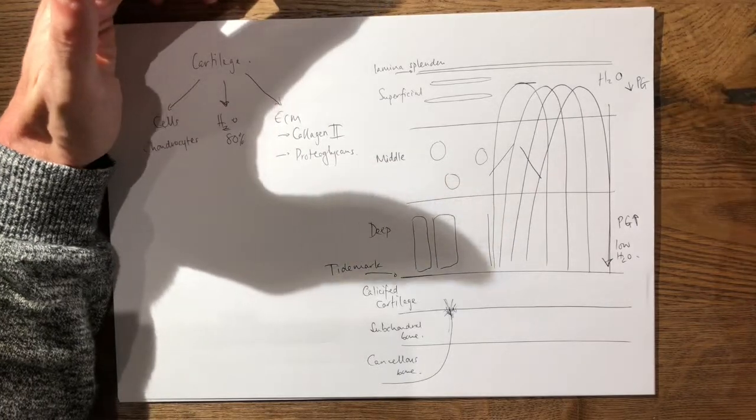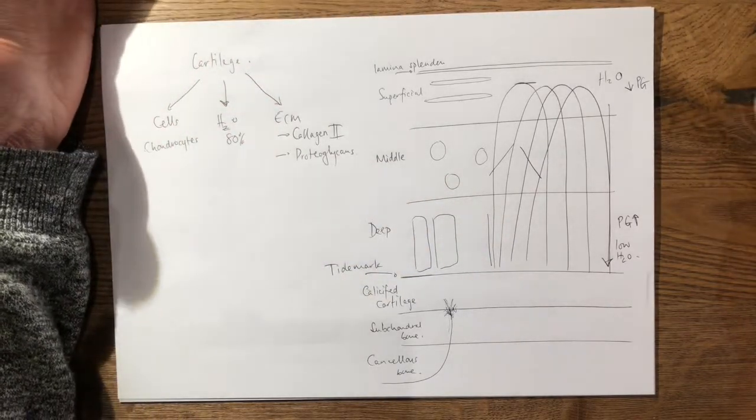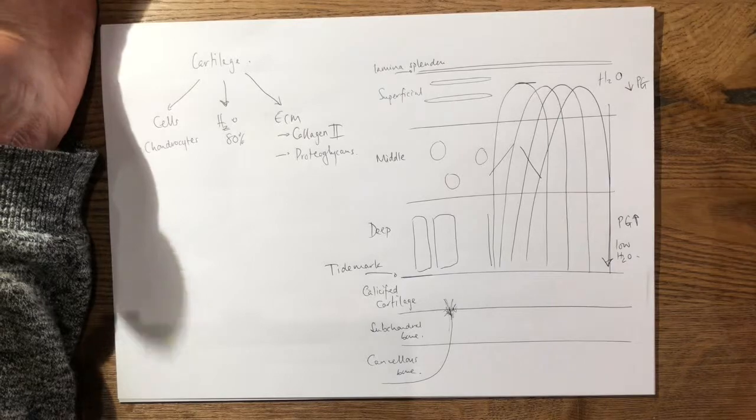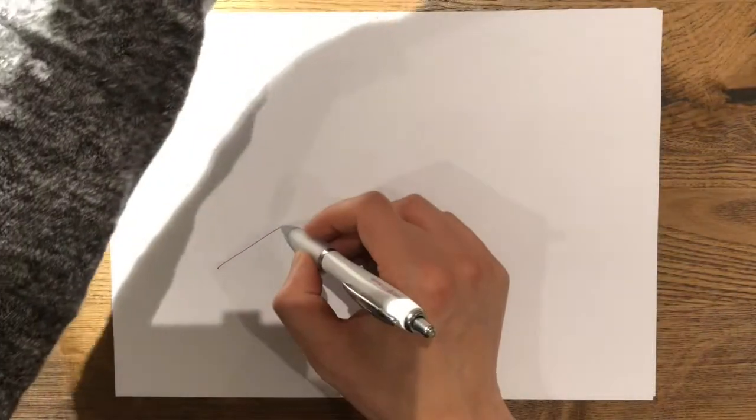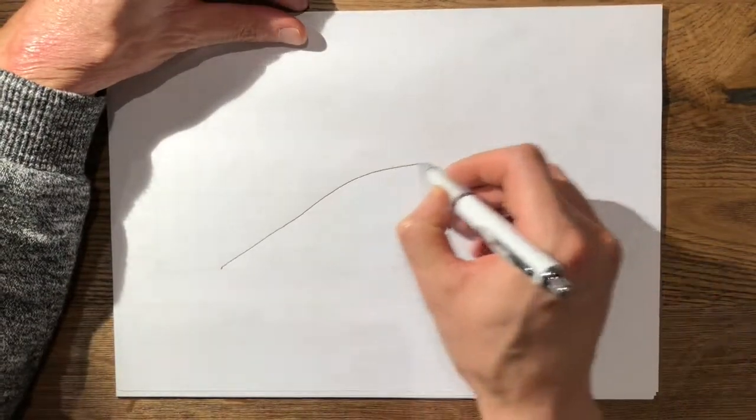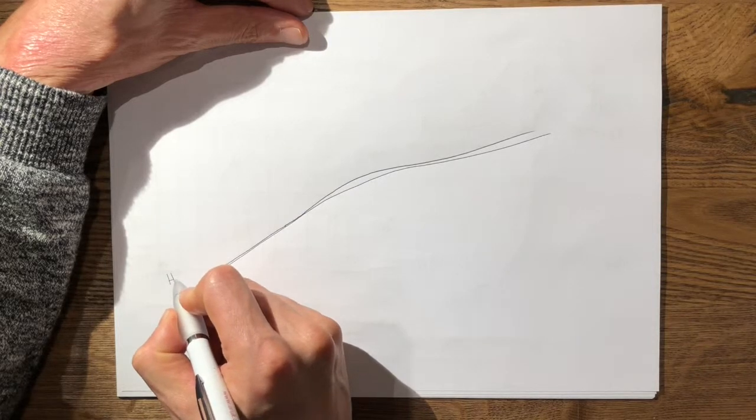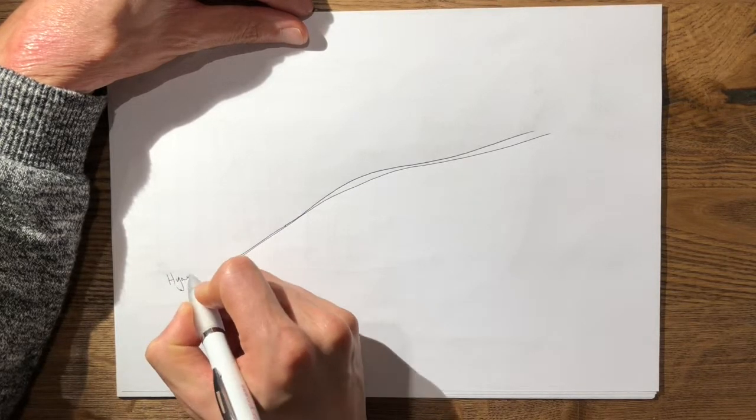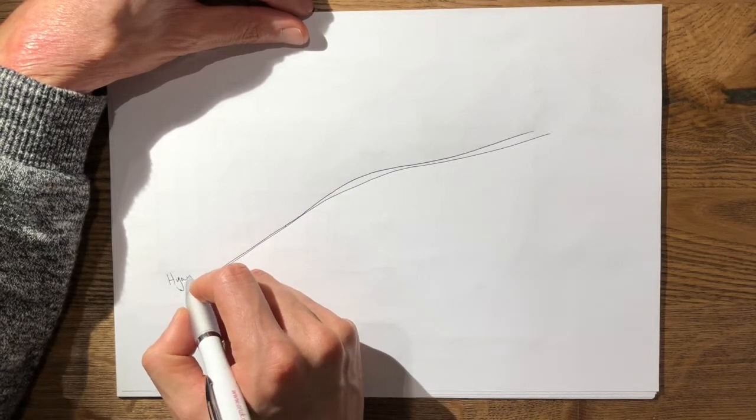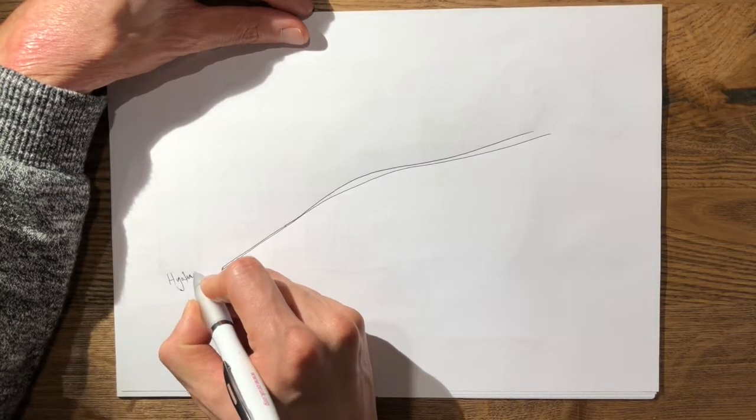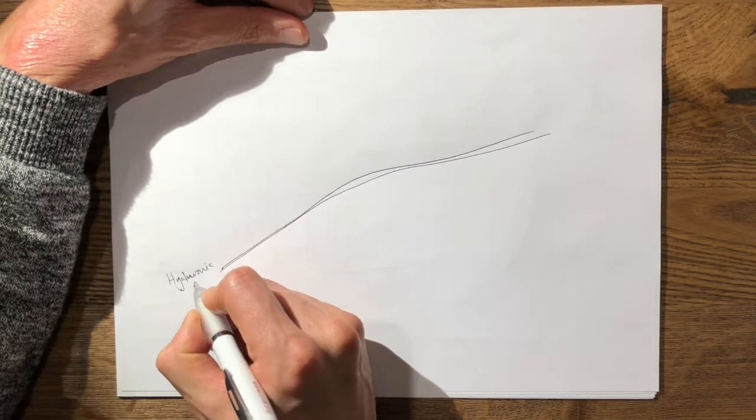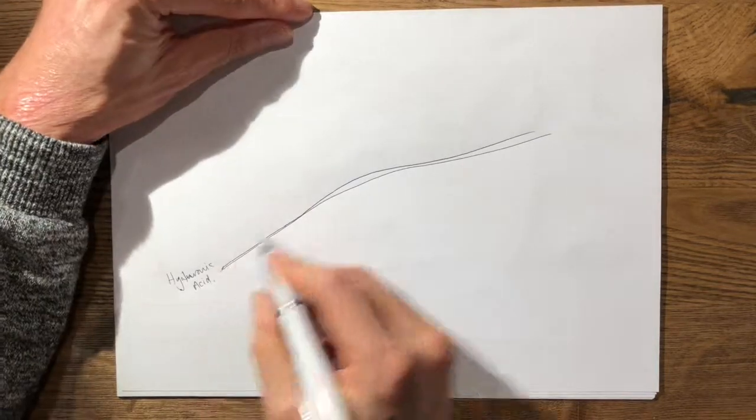So then the examiner might ask, what's proteoglycan and why is that important? And you may have to end up drawing one as well. So the way I draw proteoglycans is that you have a hyaluronic acid backbone. So this is hyaluronic acid. And this is your backbone of your proteoglycan.